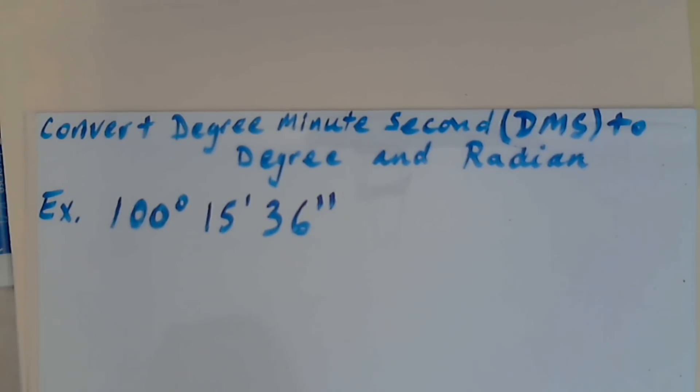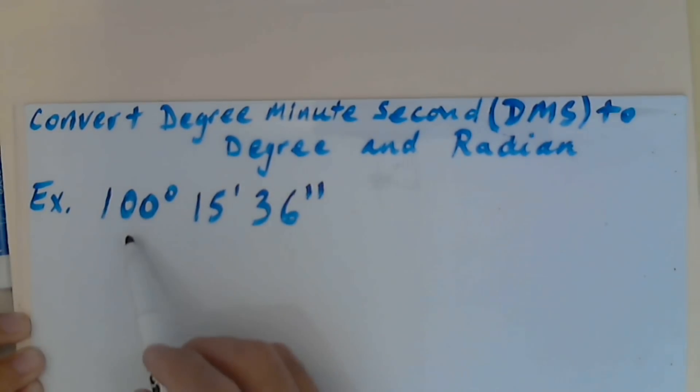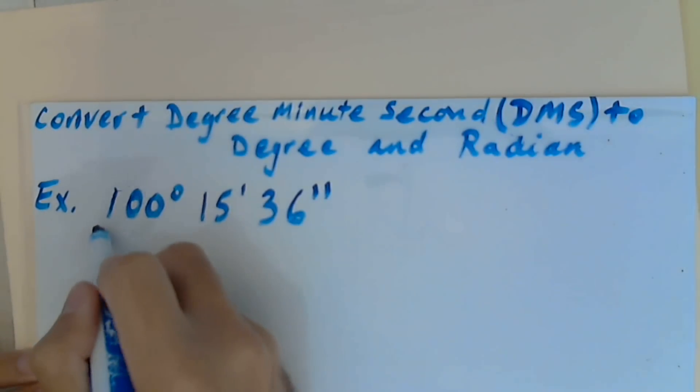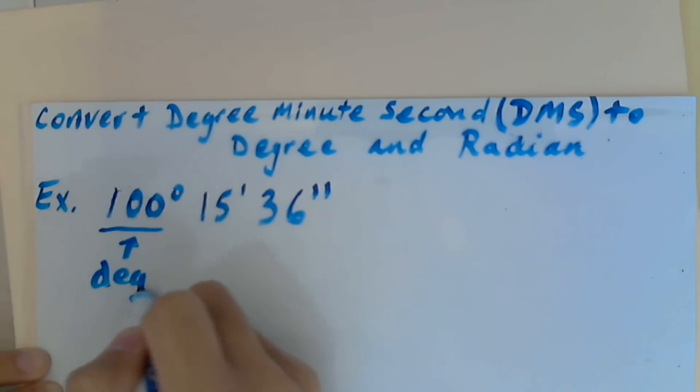Hi, welcome to my video. Today I want to show you how to convert degrees, minutes, seconds to degrees and radians. In order to find radians, first we must convert this into degrees. We know 100 represents the degrees, 15 represents the minutes, 36 represents the seconds.